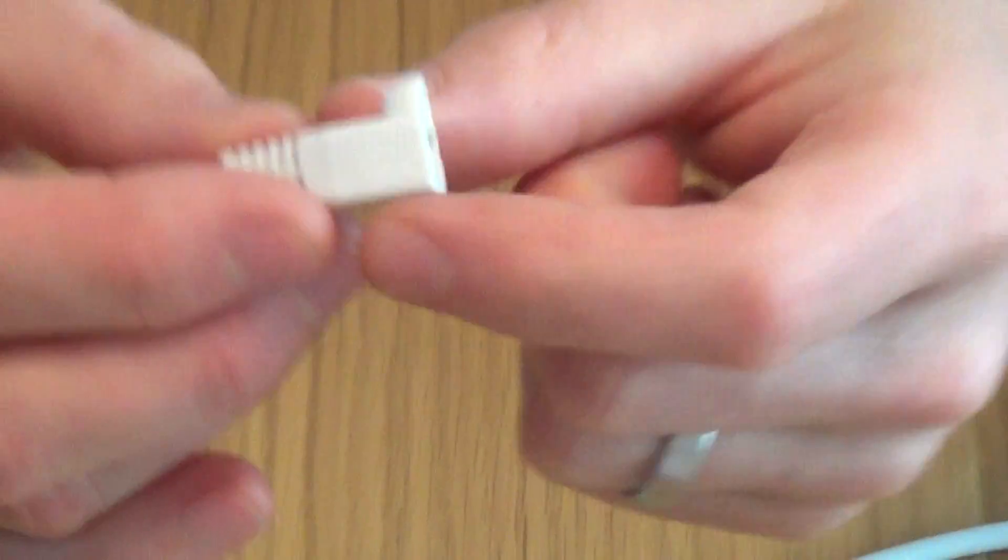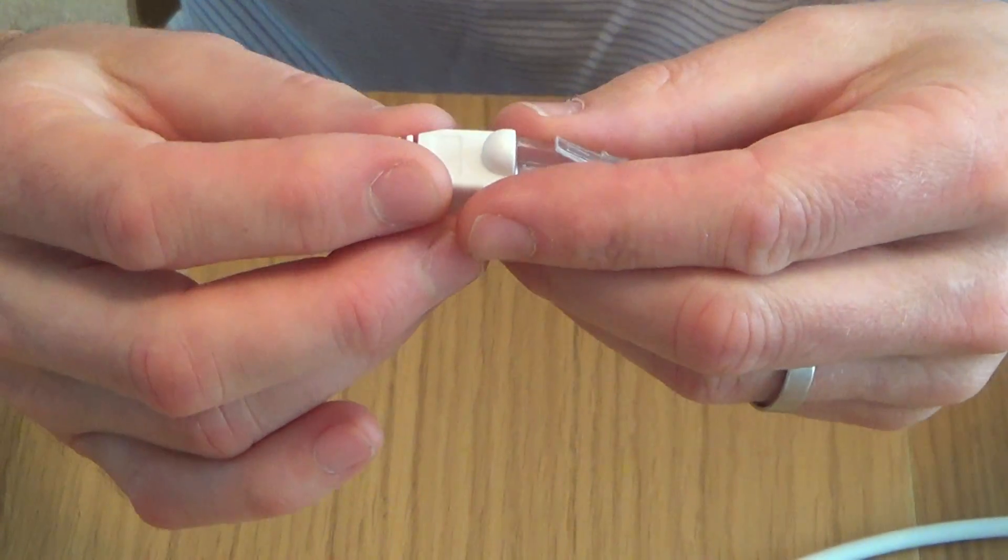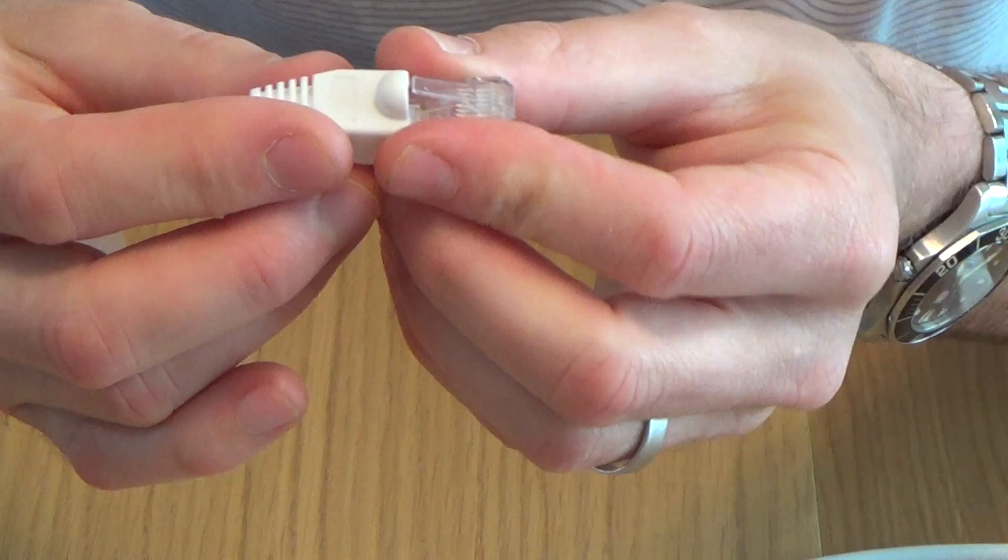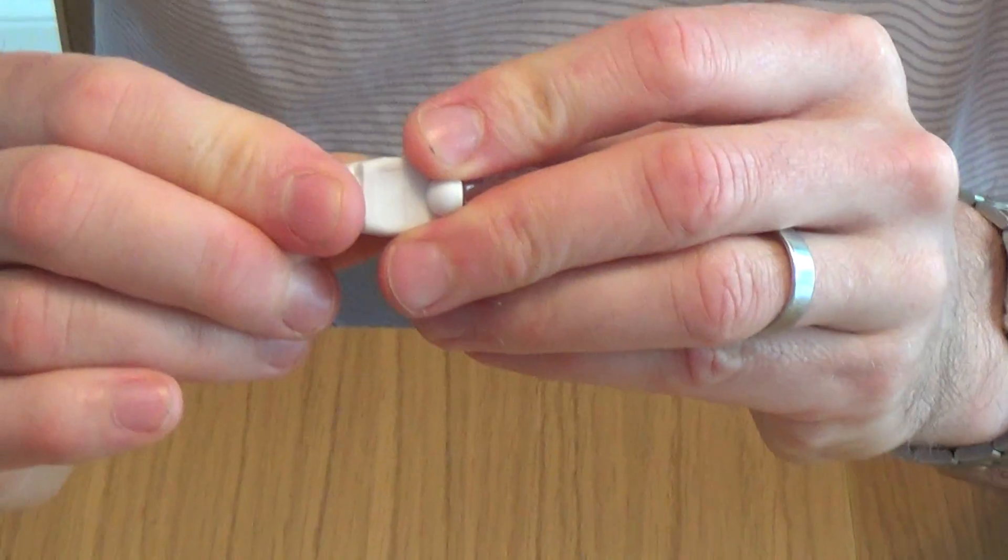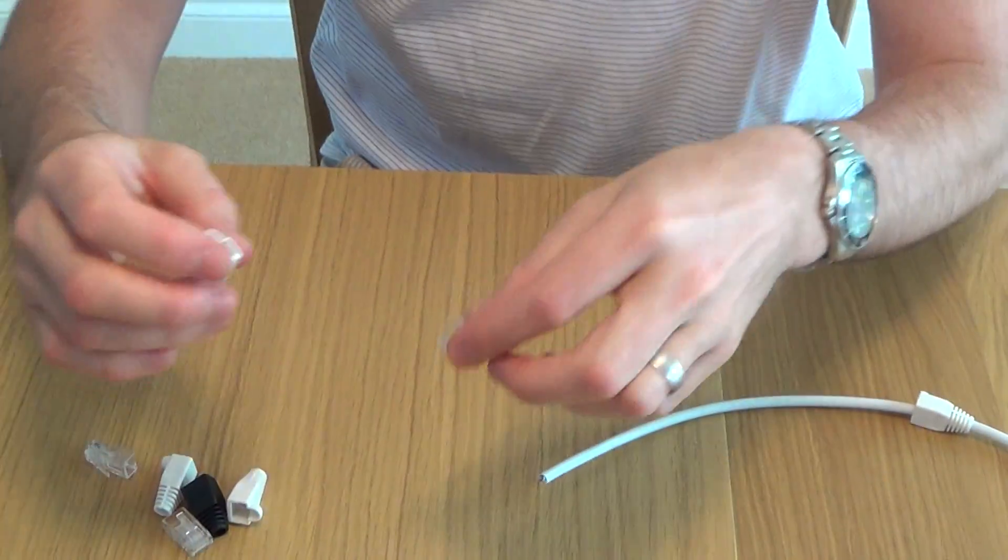These are called strain relief boots, they just give the plug and the cable a little bit of protection when it's plugged into your router or your PC, whatever you're plugging it into, your Xbox, it just stops the cable from bending too much. You get these in all different colours and they just slide on the cable.